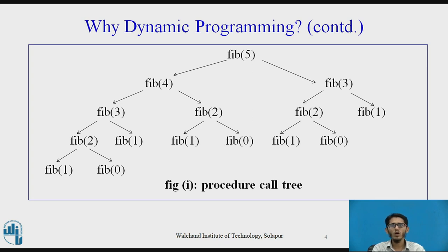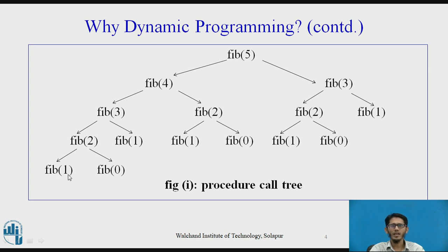This is a procedure call tree for the Fibonacci function where n equals 5. When fib(5) is called, it makes recursive calls passing values 4 and 3. Similarly, fib(4) calls itself recursively with values 3 and 2, and fib(3) calls fib(2) and fib(1). This continues until the terminating condition is reached when n equals 0 or 1. This is a recursive approach to the Fibonacci sequence.